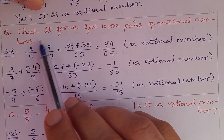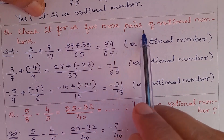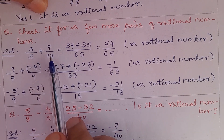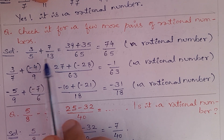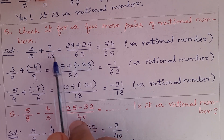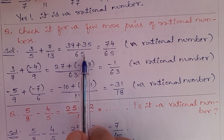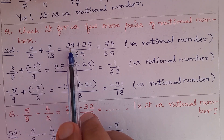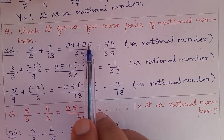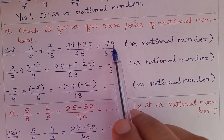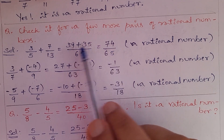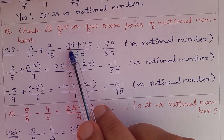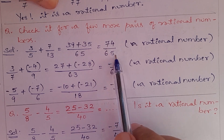Check a few more pairs of rational numbers. 3/5 + 7/13: take the LCM of 5 and 13, which is 65. Using the butterfly method: 3 × 13 = 39, and 5 × 7 = 35. Adding 39 and 35: 9 + 5 = 14, write 4 carry 1; 3 + 3 = 6, plus carry 1 = 7. So the answer is 74/65.